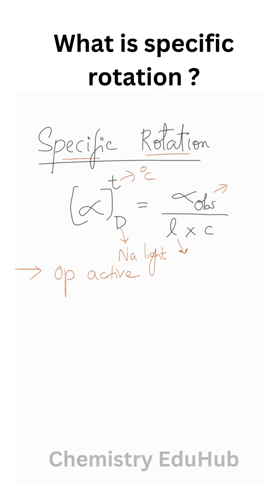l is the length of the test tube where we take the optically active sample in decimeter, and c is the optically active compound that we take in gram per ml quantity.